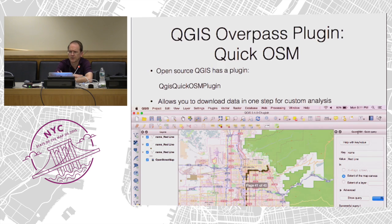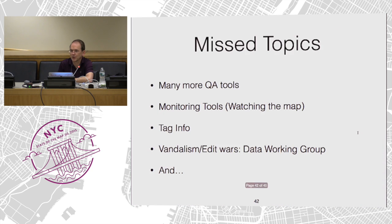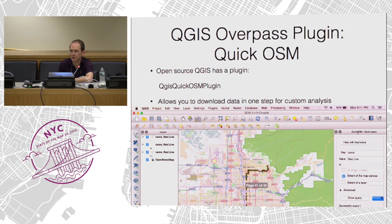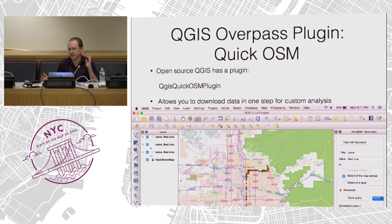QGIS also has an Overpass plugin, which means you can do the same thing within QGIS quickly — one-step analysis. Someday I will actually get to the point where I have code that can do some really cool things with comparing addresses that have been imported with OpenStreetMap and see where things have fallen out.